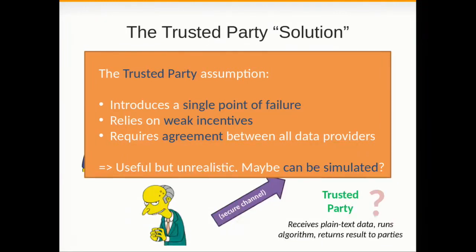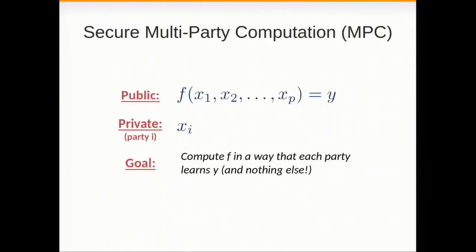This is a useful assumption but unrealistic and the question is whether it can be simulated. We're in the MPC session so you know it can. So here MPC comes to the rescue. We know that any polynomial functionality F can be evaluated in a privacy-preserving way where you have different parties providing private inputs in a way that only the output of the computation is learned by the parties and nothing else. The problem is that for machine learning applications the generic algorithms like Yao circuits or GMW do not really scale.